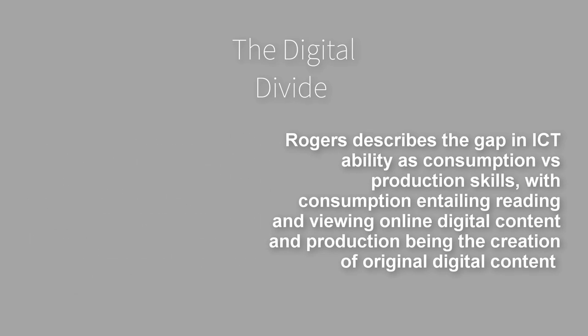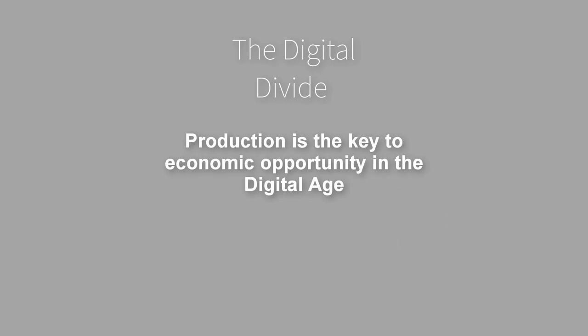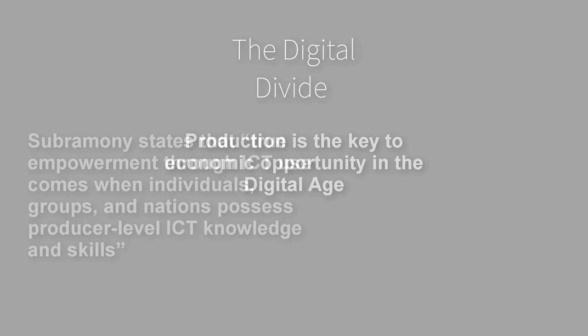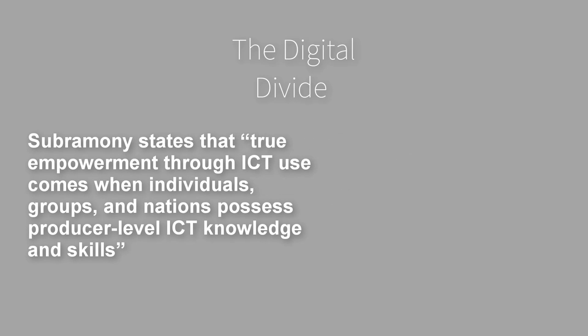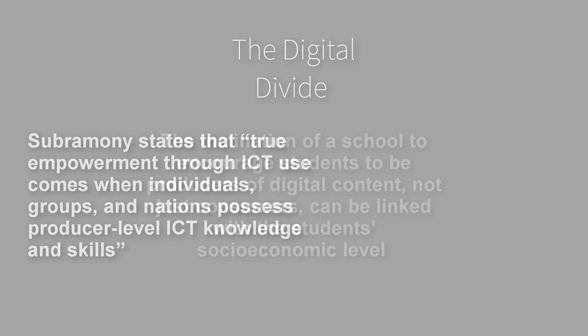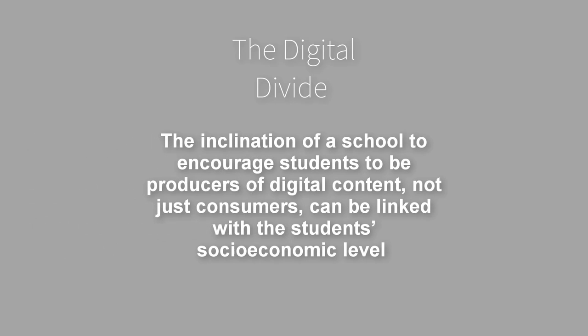Rogers describes the gap in ICT ability as consumption versus production skills, with consumption entailing reading and viewing online digital content and production being the creation of original digital content. Production is the key to economic opportunity in the digital age. Subramoni states that true empowerment through ICT use comes when individuals, groups, and nations possess producer-level ICT knowledge and skills. The inclination of a school to encourage students to be producers of digital content, not just consumers, can be linked with the student's socioeconomic level.